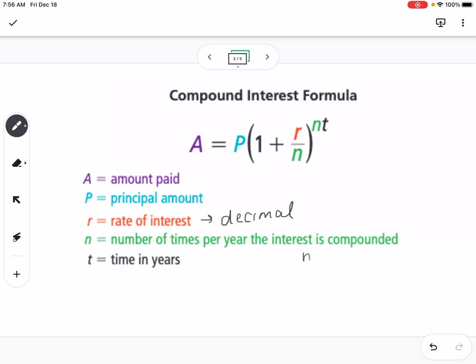And n is the number of times per year the interest is compounded. So if it says monthly, you would use 12. If it says quarterly, you would use 4. If it says annually, you'd use 1. And then t is our time in years.